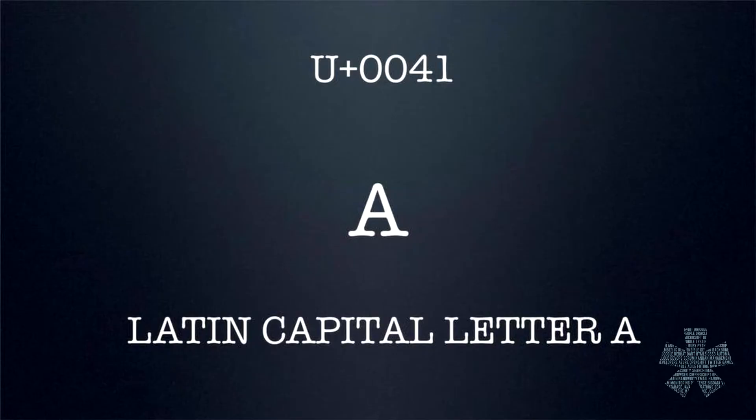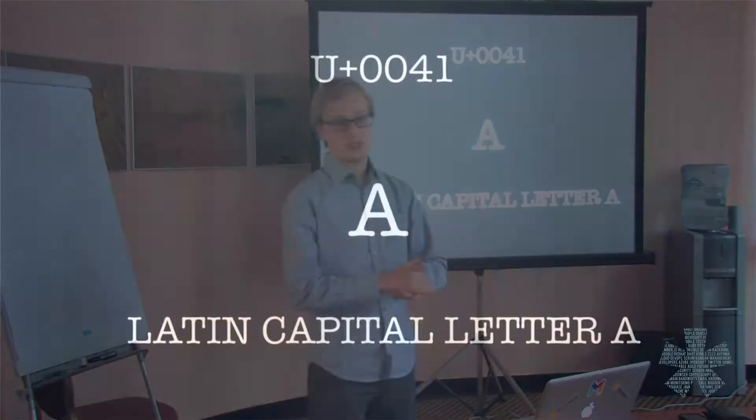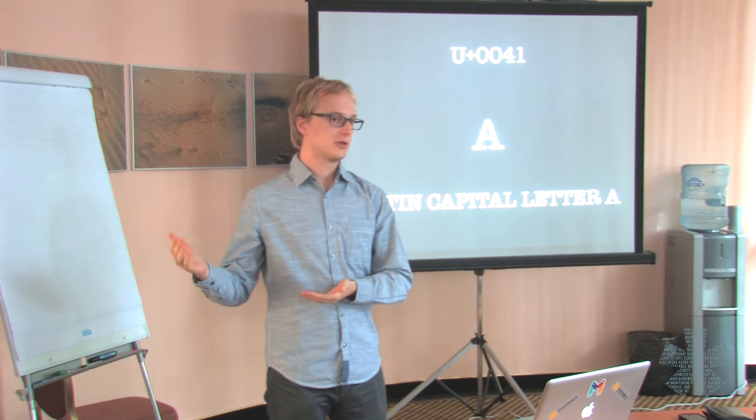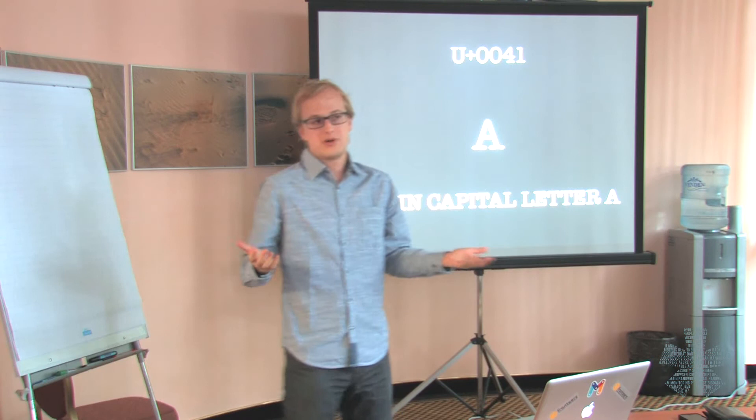For example, Unicode maps the Latin capital letter A to the code point U+0041. One thing to note here is that the code point is usually formatted as a hexadecimal digit, zero-padded up to at least four digits, and then gets the U+ prefix. So a code point is practically just a number, but this is the way you will most commonly encounter them.